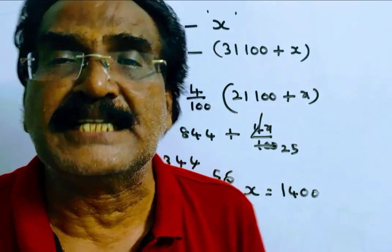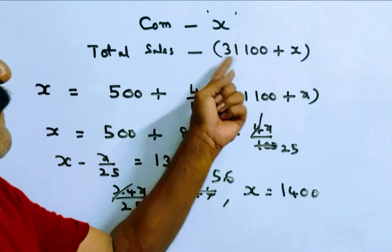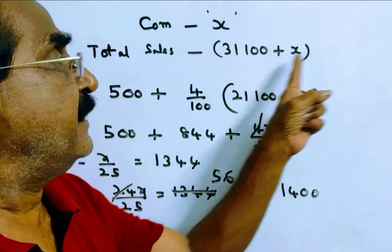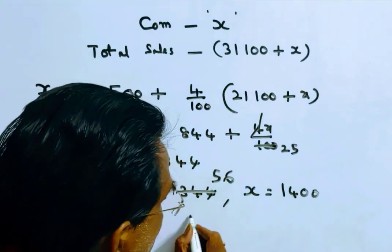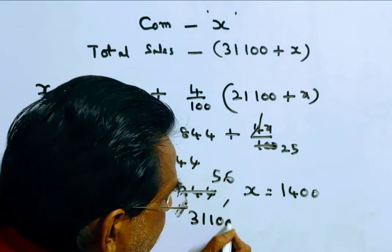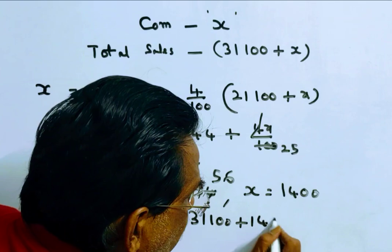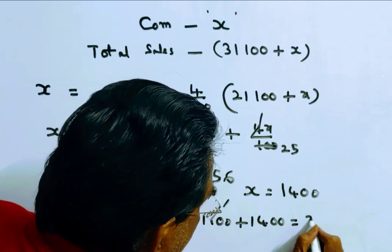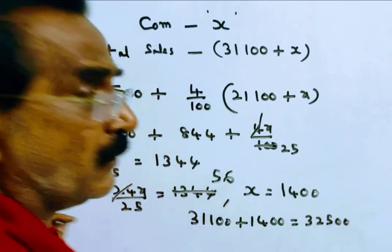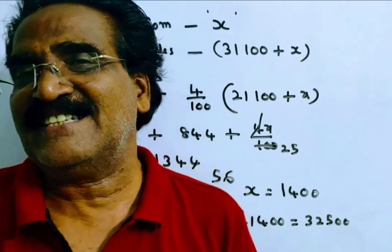Now we want the total sales. Total sales is 31,100 plus 1400, which equals 32,500. Thank you, have a nice day.